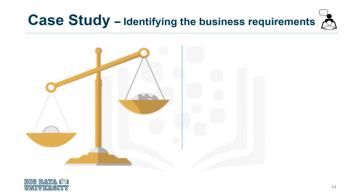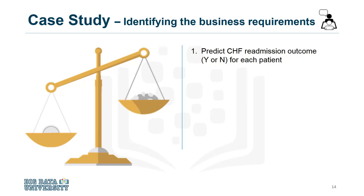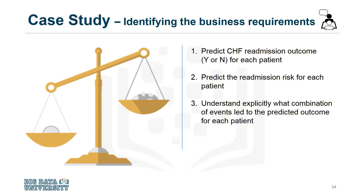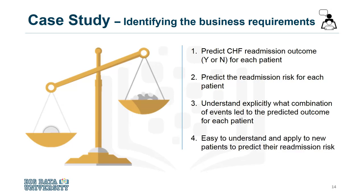Finally, four business requirements were identified for whatever model would be built: predicting readmission outcomes for those patients with congestive heart failure, predicting readmission risk, understanding the combination of events that led to the predicted outcome, and applying an easy-to-understand process to new patients regarding their readmission risk. This ends the business understanding section of this course. Thanks for watching.